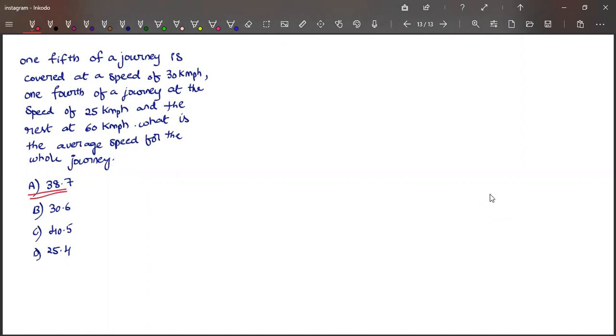Today's question is this, and the answer for this question is 38.7. Let's see how we get 38.7. We are given one fifth of the journey with 30 kilometers per hour, one fourth with 25 kilometers per hour, and the rest at 60 kilometers per hour.